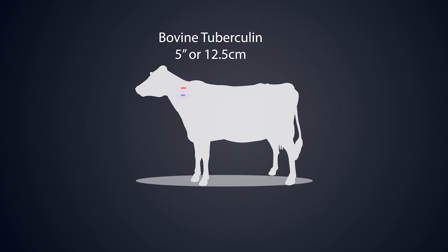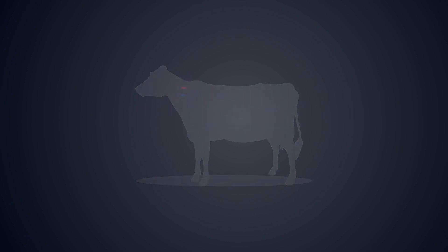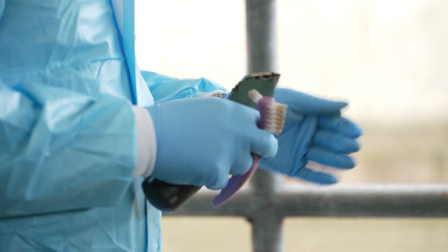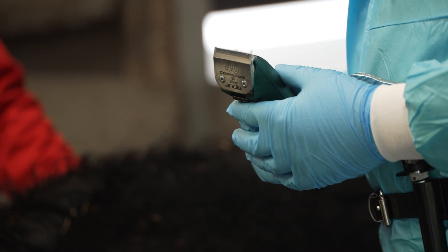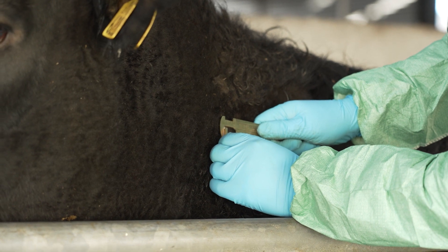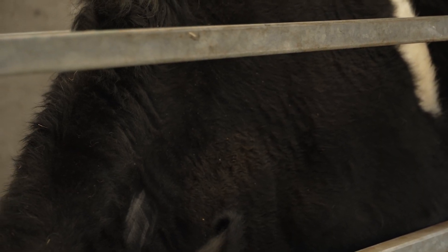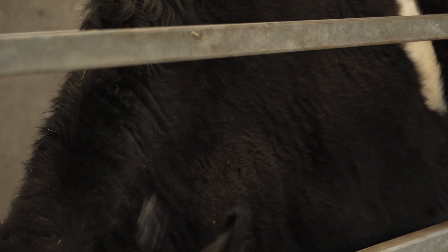In young animals where there is insufficient space to adequately separate the sites, one injection shall be made on each side at identical sites in the center of the middle third of the neck; this variance must be recorded. The injection sites must be clipped, and a fold of skin within each clipped area is taken between the forefinger and thumb, measured with calipers, and the measurements recorded.